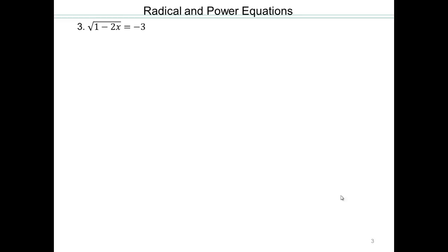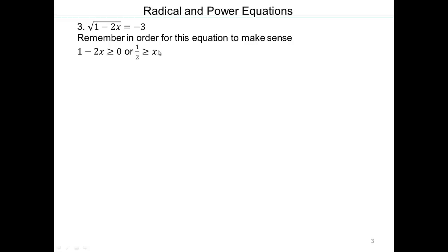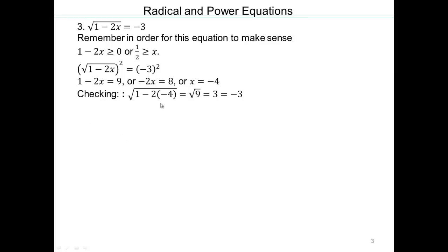What do you think will happen here? Can the square root of a real number be negative? The answer is no. Let's say I forgot that and tried to solve. For this to make sense, we need 1 minus 2x to be greater than or equal to 0, so x must be less than or equal to one half. Squaring both sides and solving gives x equals negative 4. Check: 1 minus 2 times negative 4 is 9; square root of 9 is 3, but we want negative 3 — it does not work. No solution. The square root of any real number is always positive, so there is no solution to this equation.